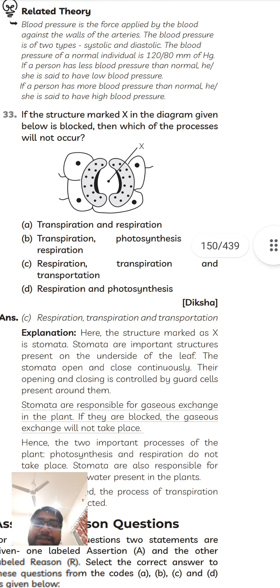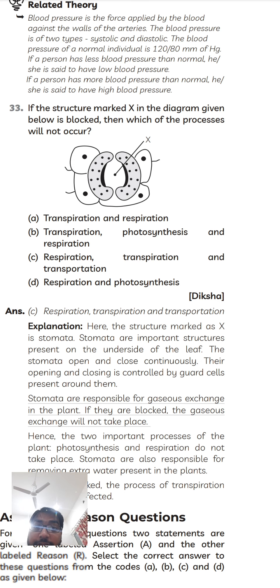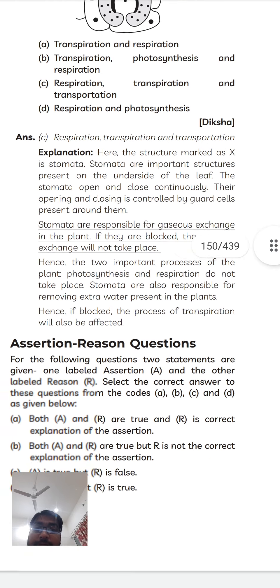The structure X in the diagram given below is blocked, then which of the process will not occur? Definitely transpiration. Next, option C is correct.